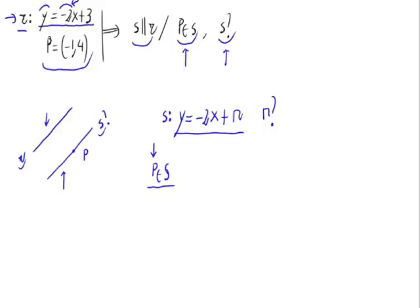So, let's substitute the coordinates of the point P, and with that we will obtain the value of N for a straight line S that goes through the point P. The point P is minus 1, 4, where the minus 1 is the coordinate X, and the Y is the 4.